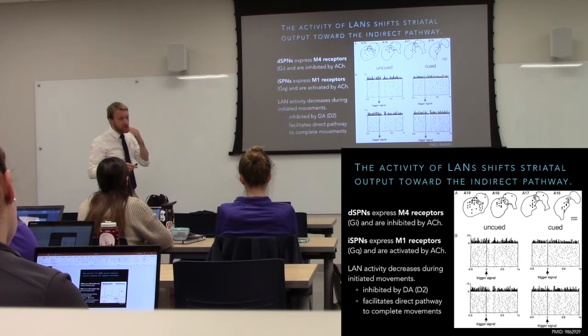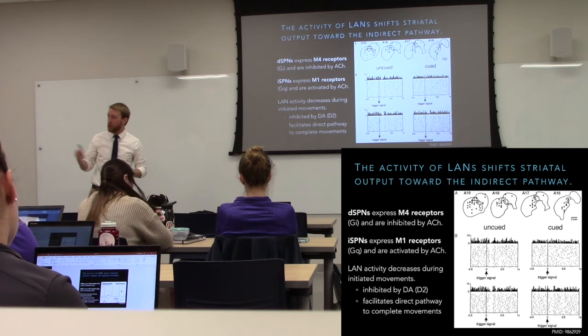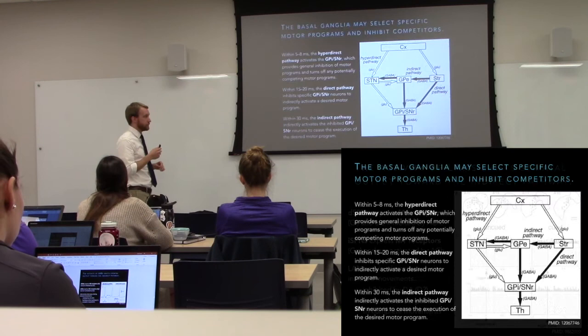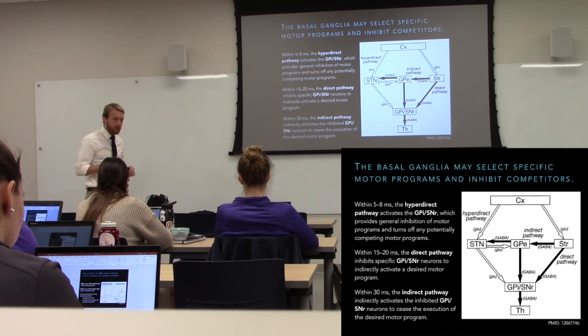So we have two things that determine are we biased more toward action or inaction: dopamine input or cholinergic input. And they do opposite things. Taken together, what we think our basal ganglia are going to do is allow us to select appropriate actions.